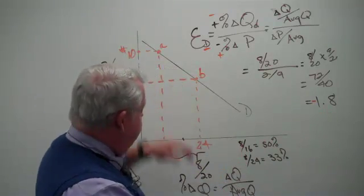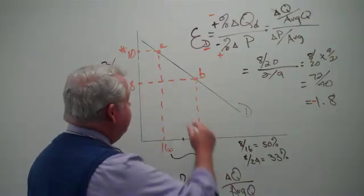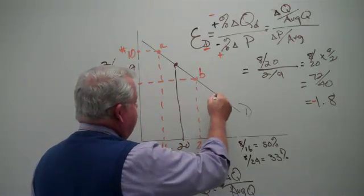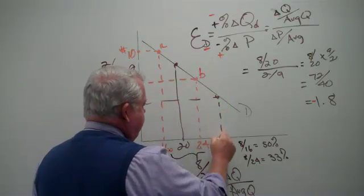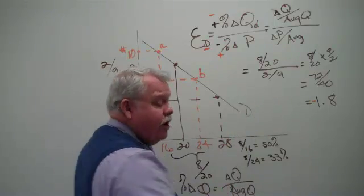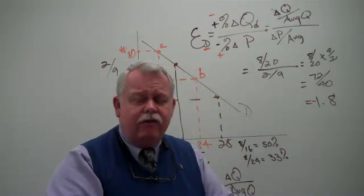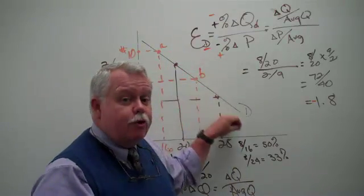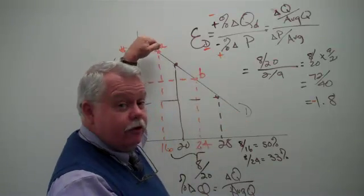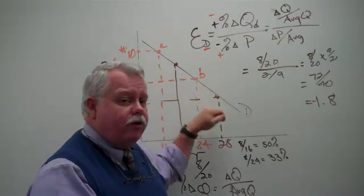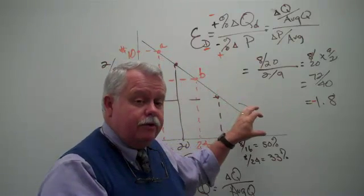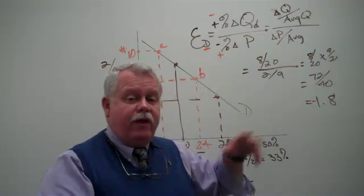Now, remember this too. If we took two different points on this demand curve, we had 9 here and 20, and we had 7 here and I don't know, 28, we wouldn't get the same number. The price elasticity of demand changes as you go up and down the demand curve. It's not constant. The slope of this line, it's a straight line. The slope is constant. But the price elasticity of demand changes. More about that as we go along.